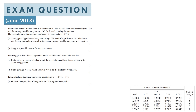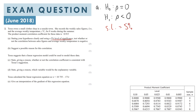To finish off, we have an exam question from June 2018. Tessa owns a small clothes shop in a seaside town. She records the weekly sales figures W pounds and the average weekly temperature T degrees Celsius for eight weeks during the summer. The PMCC for these data is minus 0.915. Part A asks us to state our hypotheses clearly and use a 5% level of significance to test whether or not the correlation between sales figures and average weekly temperature is negative.